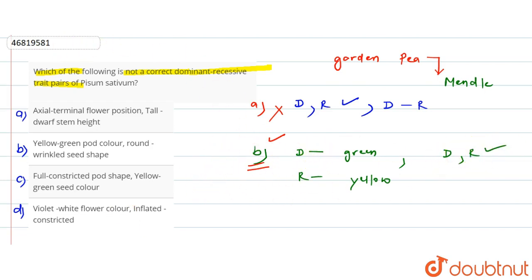But the earlier one was incorrect, so that is our answer. In option C, we have full constricted pod shape. Full inflated is dominant, and constricted is recessive. So this is correct.